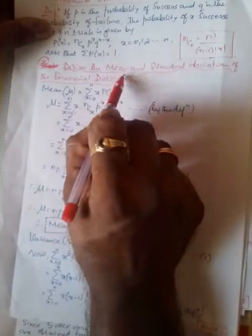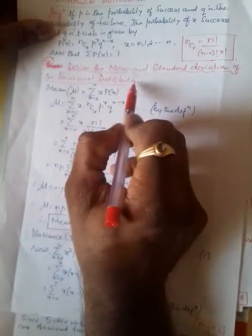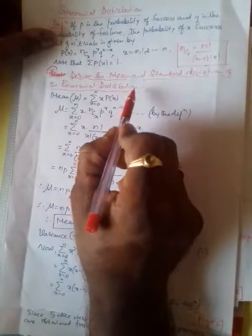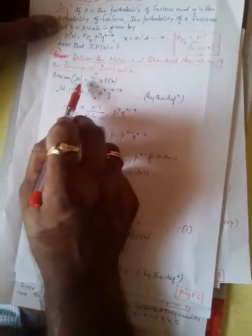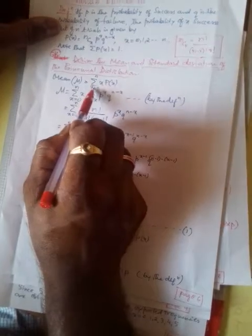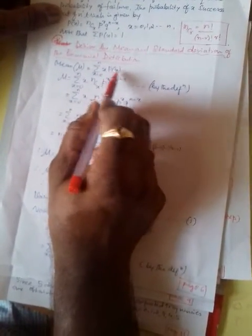Let me go for the derivation. The question will be given as: Derive the mean and standard deviation of the binomial distribution, as we are going to see in the forthcoming IA as well as in the semester examination. Let me go for the mean mu. Mean is always denoted by mu, given by summation from X = 0 to N of X * P(X).